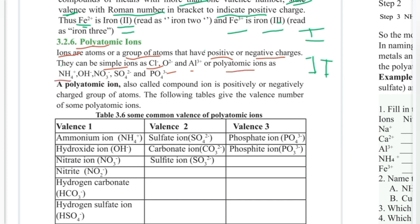Examples of polyatomic ions include ammonium, hydrogen oxide, nitrate, sulfate, and phosphate. These are different from simple ions, which are single-atom ions. A simple ion is a single charged atom, while a polyatomic ion is a group of atoms with a charge.